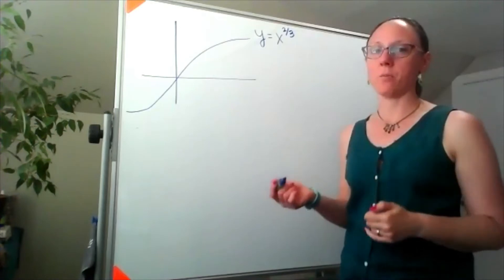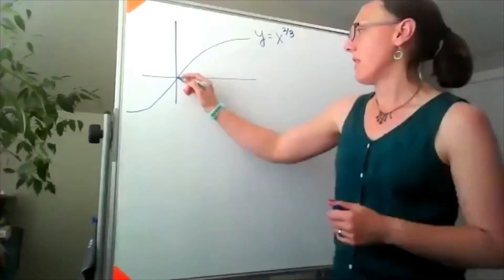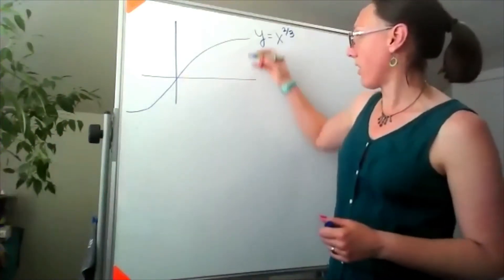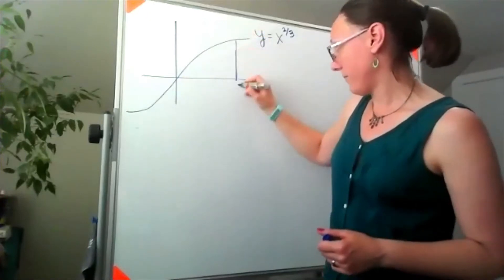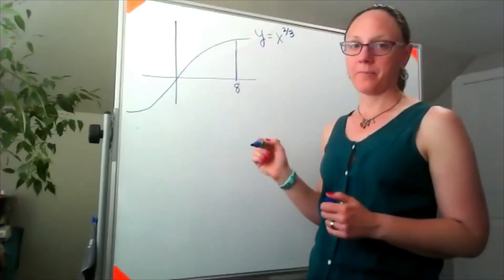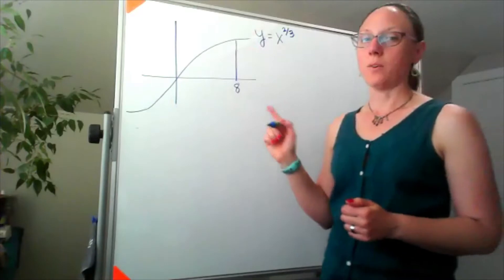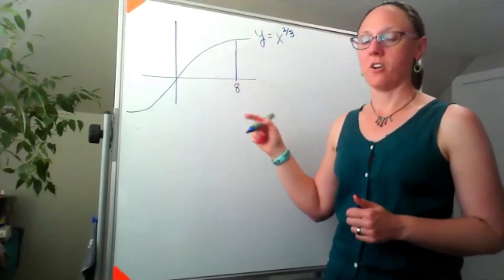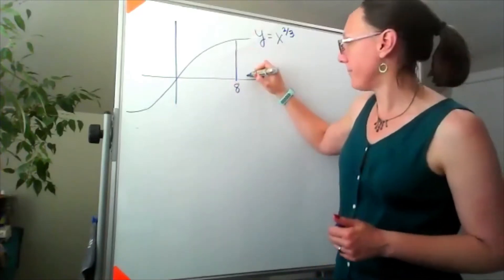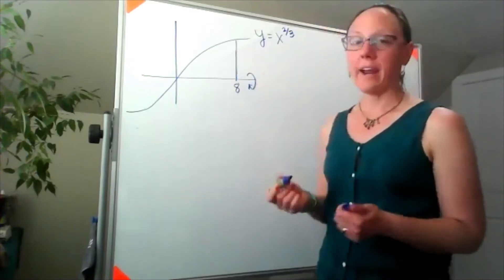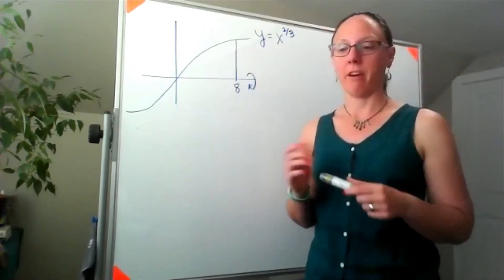I want to take the portion of this graph that goes from 0 to 8, spin this region around the x-axis, and find the volume that forms.